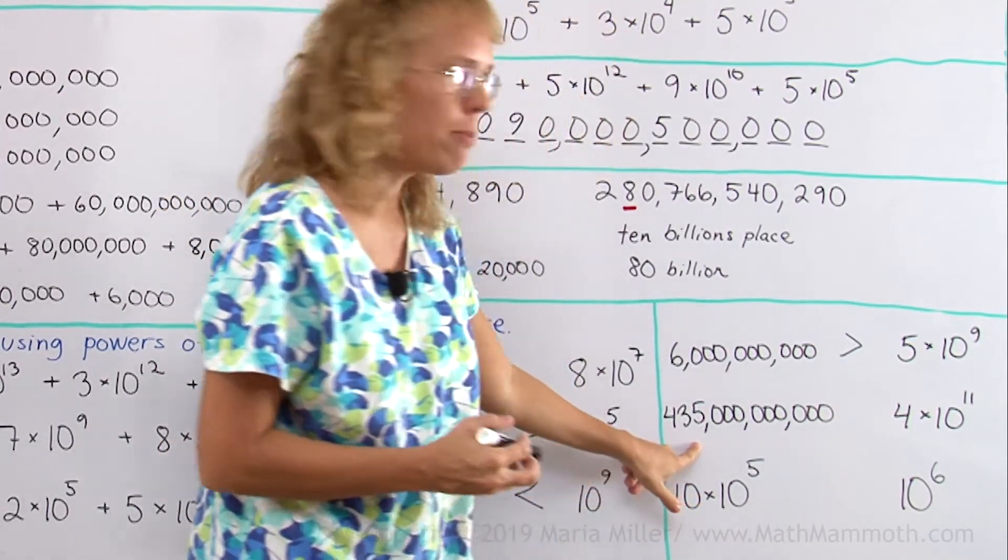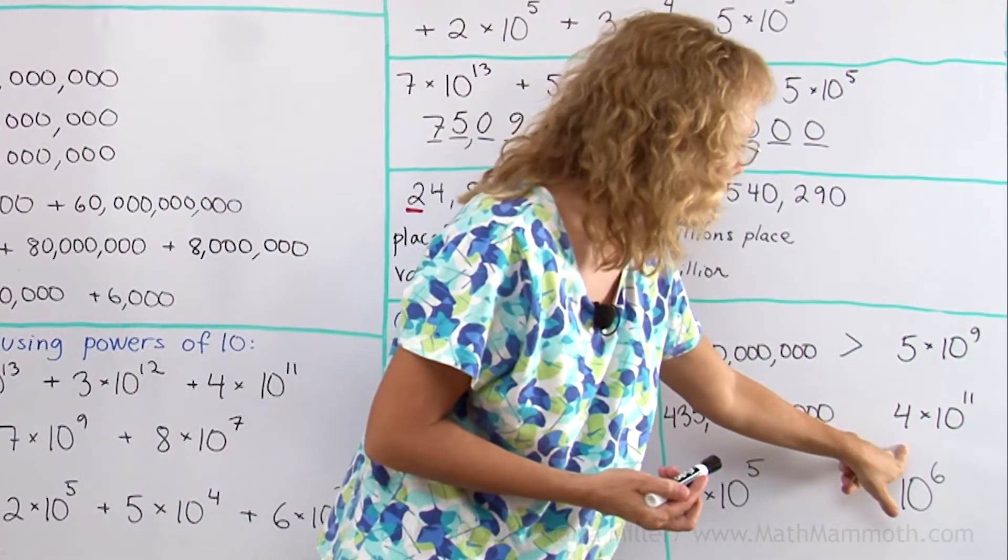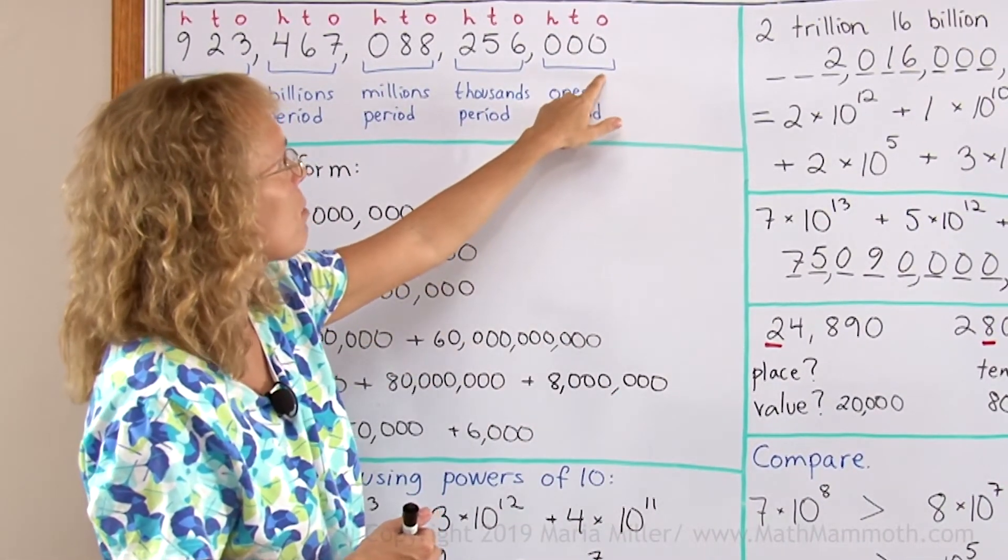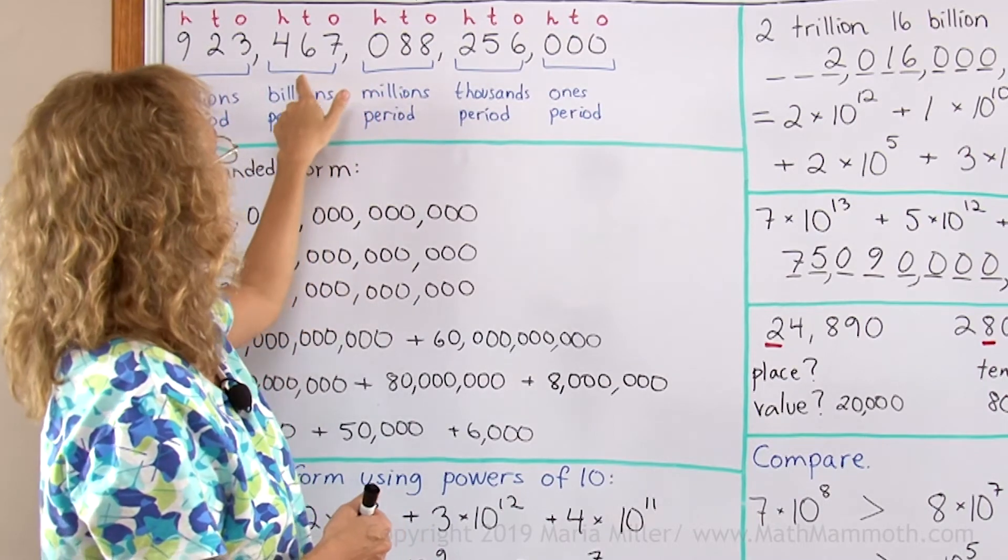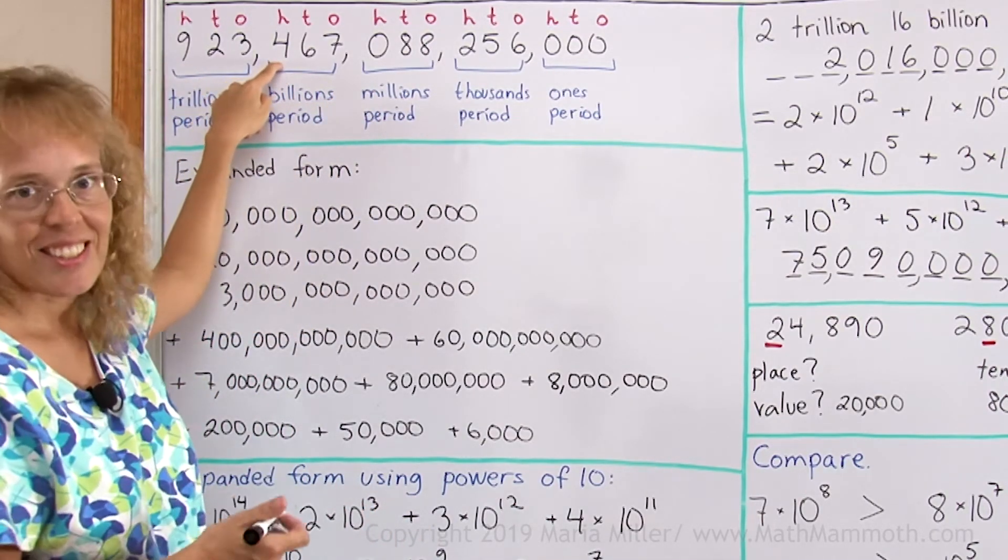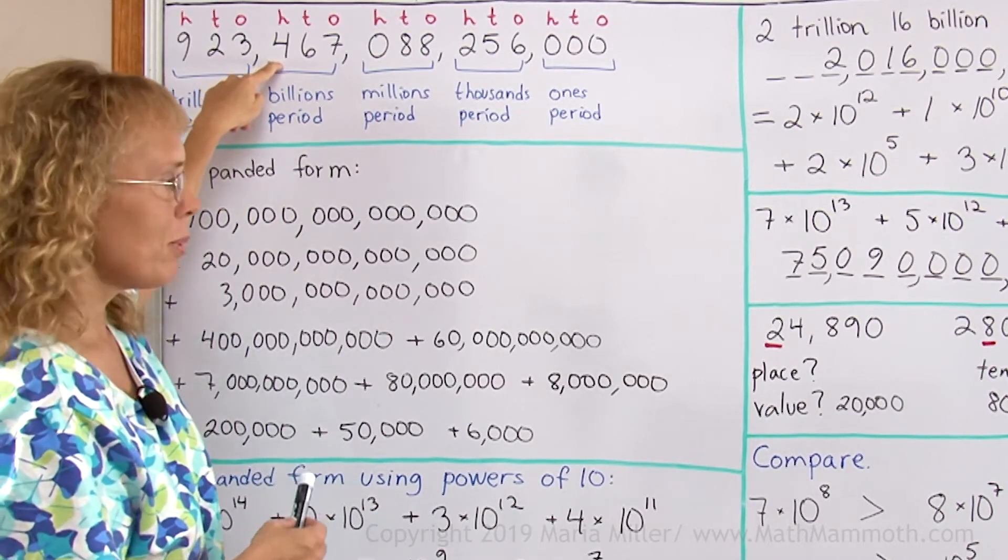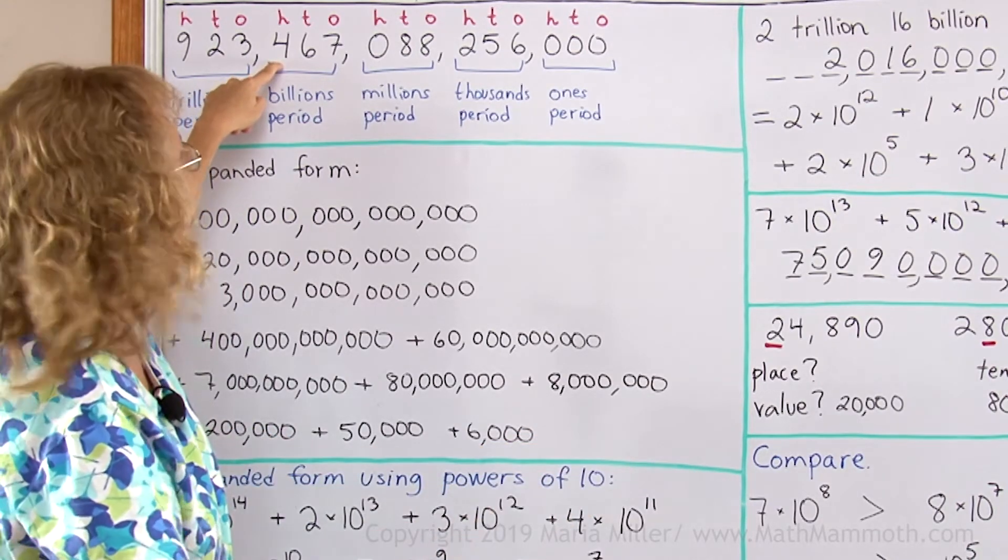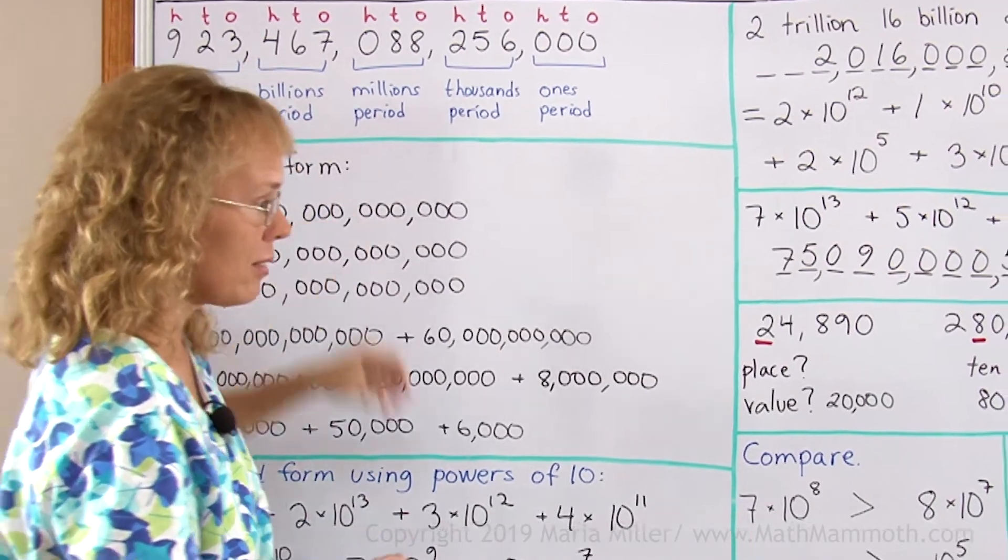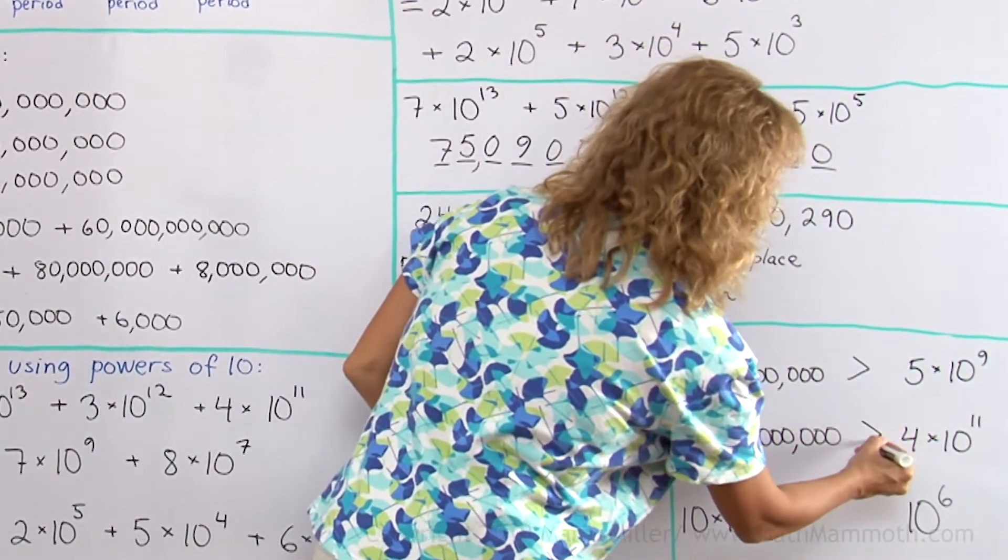Here, 435 billion. 4 times 10 to the 11th. Again, count 11 digits—1, 2, 3, 4, 5, 6, 9—11 digits of zeros, and then 4 here, just like it is, actually. So it's 400 billion on the other side, on the right side. 400 billion versus 435 billion. That's clear, this is more.